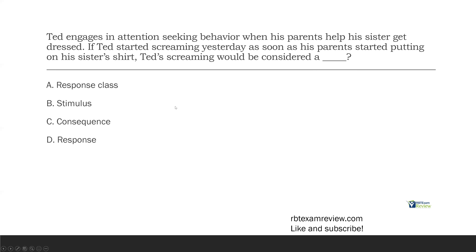Ted's screaming is not a stimulus — it's a response. Response and stimulus are different things. A consequence? Well, it's not a consequence — it was a reaction to his parents putting on his sister's shirt, which was the antecedent. It's the reaction to it, so it's going to be a response. In ABC terms: antecedent is parents putting on the sister's shirt, the behavior or response is Ted's screaming, and then we'll have a consequence based on how his parents reacted. Ted's screaming is a response in reaction to the antecedent.